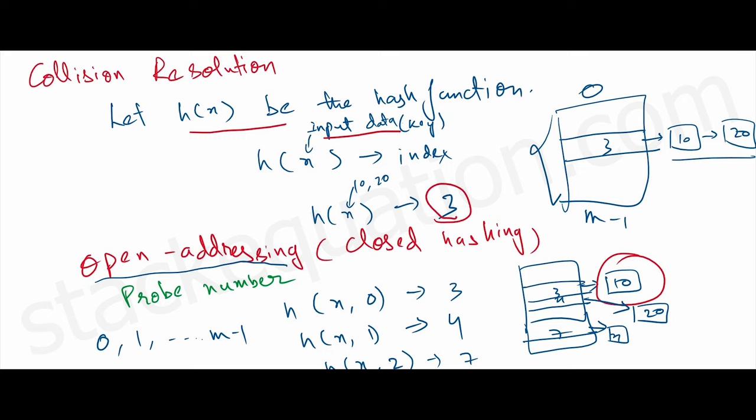There will be a collision. At index 3 it will form a linked list of two elements: 10 and 20. To resolve this collision we use open addressing, which is also known as closed hashing.